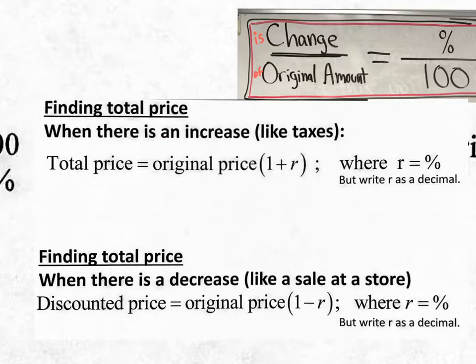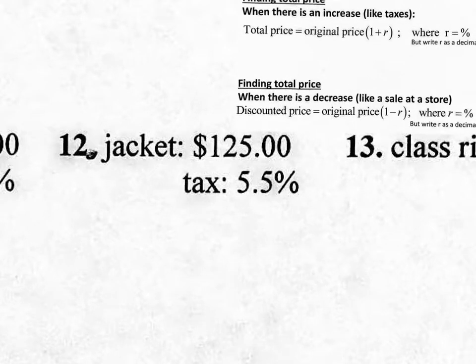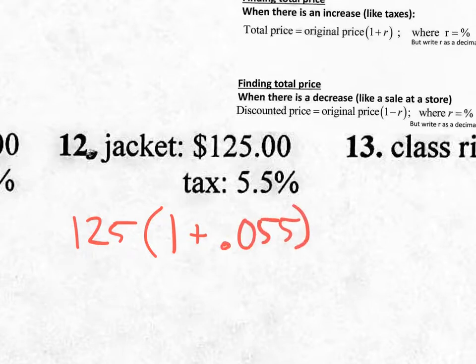So let's use our notes that we actually copied down today. When there's an increase, we're going to use the total price will be the original price, parentheses, one plus the rate that it's increasing by, which is a tax rate, but where the percent is written as a decimal. So let's do that. Original price is $125. So let's write that down. $125, parentheses, one plus the tax rate, but as a decimal. So this 5.5 tax rate is going to go one over another over. So it's going to be 0.055. Once again, 0.055.